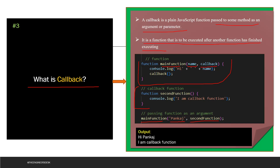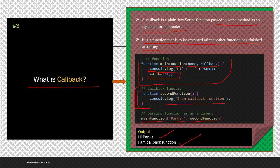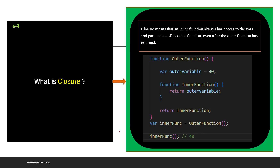So what it will do is: first it will execute this line and print "Hi Pankaj", so this line will be executed. And then it is going to execute the callback function — in place of callback we have passed the second function, so it is going to call this function and then it is going to print that statement. So this is all about the callback.